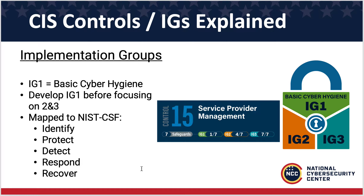Each control has safeguards. This control has seven safeguards broken up into groups one, two, and three. Implementation group one is your basic cyber hygiene, so you'll want to tackle those safeguards first, then move on to two, then three.